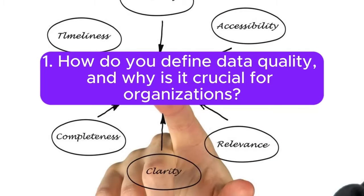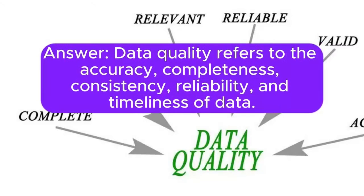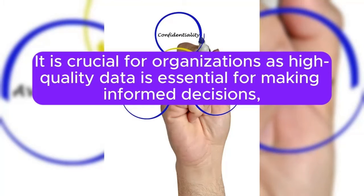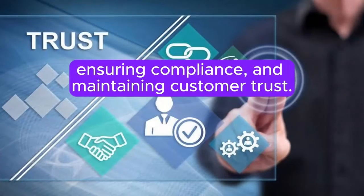1. How do you define data quality, and why is it crucial for organizations? Answer: Data quality refers to the accuracy, completeness, consistency, reliability, and timeliness of data. It is crucial for organizations as high-quality data is essential for making informed decisions, ensuring compliance, and maintaining customer trust.